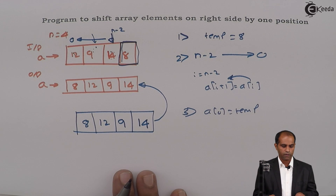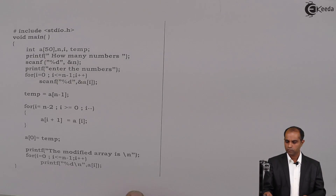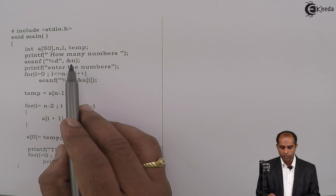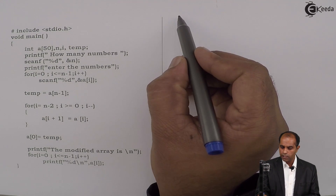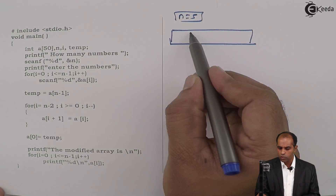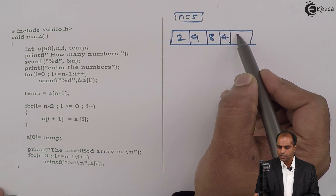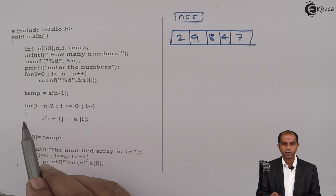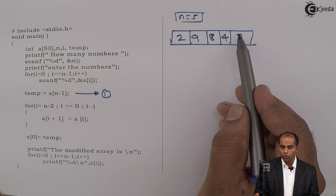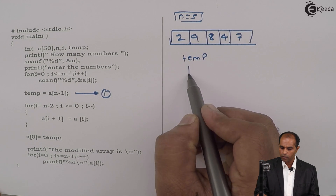Let us understand these steps with the program itself. Here I have a program which illustrates how exactly this operation works. The value of N is 5, and the array A stores these 5 values: 2, 9, 8, 4, 7. These are the elements entered by the user. Step number one: the element going out — A of N minus 1 — is copied onto temp. So temp is now 7.